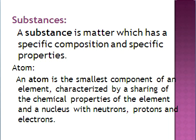A typical atom consists of a nucleus jis mein protons aur neutrons wujood hote hai. Aur usi nucleus ke orbit mein electrons bhi hote hai. To ek typical atom nucleus per mushtamil hota hai jis mein protons, neutrons wujood hote hai, aur nucleus ke orbit mein electrons paaye jate hai.